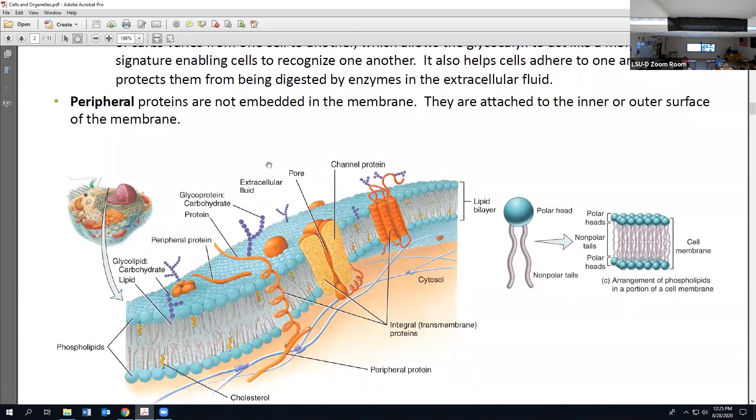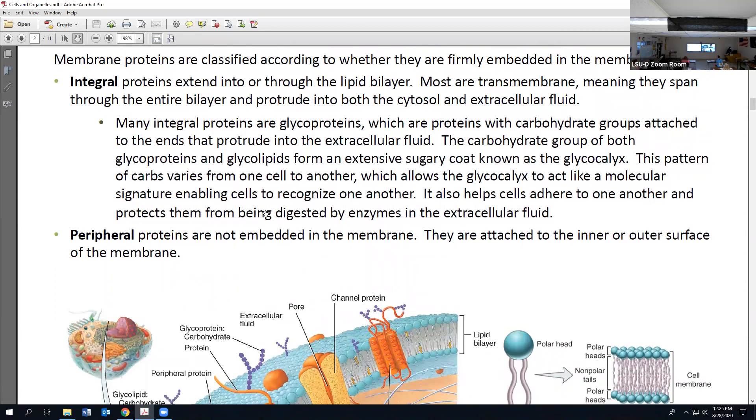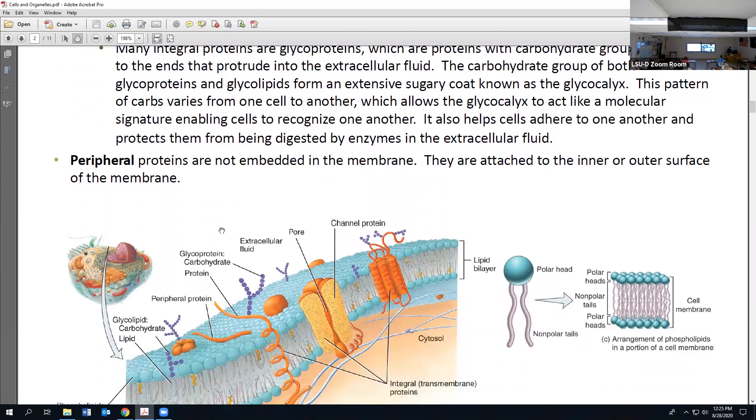Peripherals you can find on the inside of the cell or on the outside - they are just on the periphery, that's why they're called peripheral proteins. Let's talk about glycoproteins, which a lot of our integrals are - proteins with a carbohydrate attached to them.